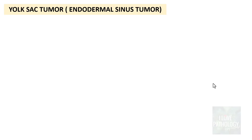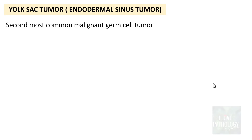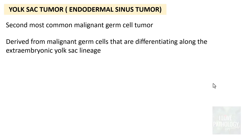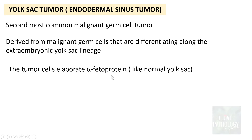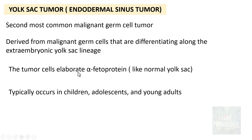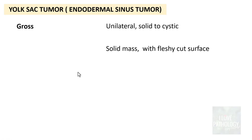The third important tumor is Endodermal Sinus Tumor (Yolk Sac Tumor) — the second most common malignant germ cell tumor after dysgerminoma. These are derived from malignant germ cells differentiating along the extra-embryonic yolk sac lineage, and these tumors elaborate alpha-fetoprotein, just like the normal yolk sac. They typically occur in children, adolescents, and young adults. Grossly they are unilateral, most often solid but can be cystic, with a fleshy cut surface; hemorrhage and necrosis can be seen.